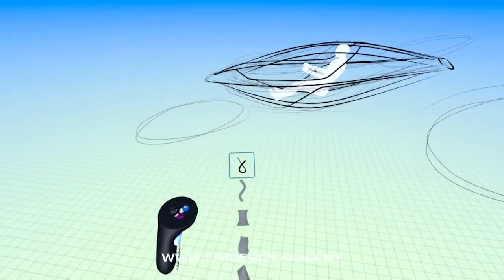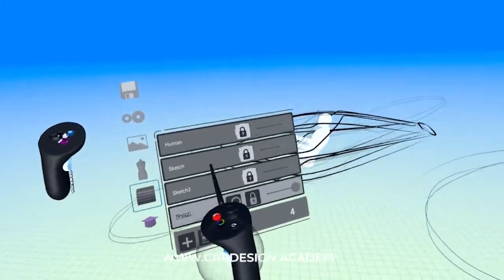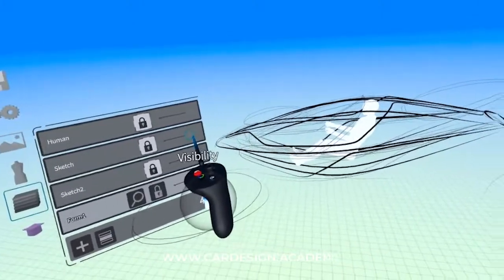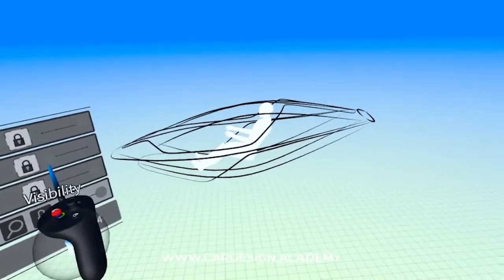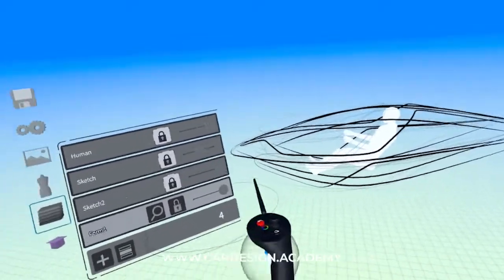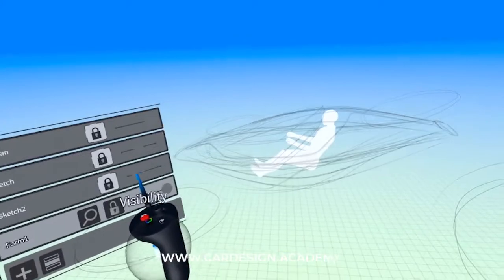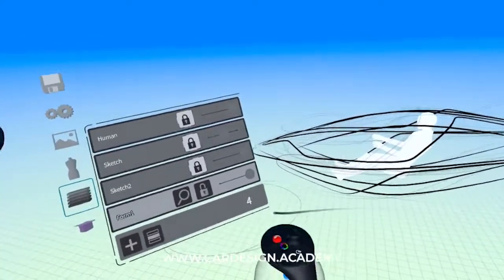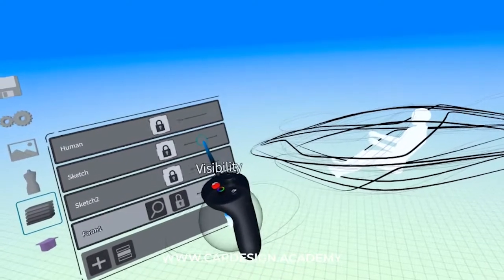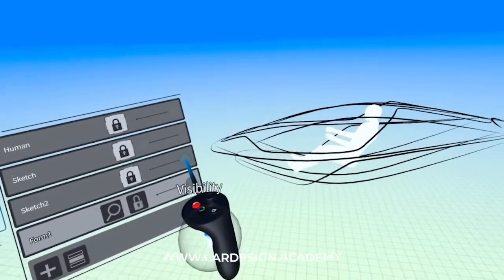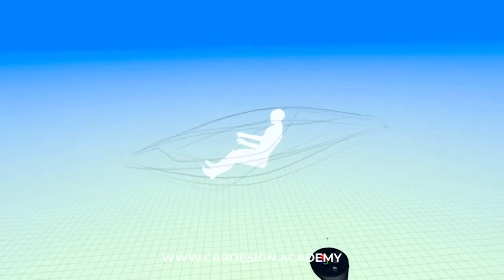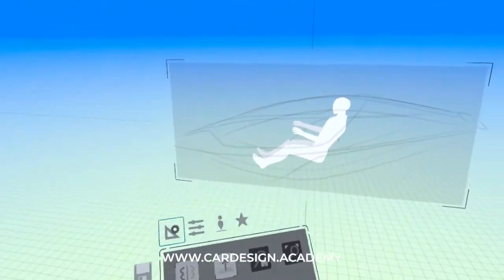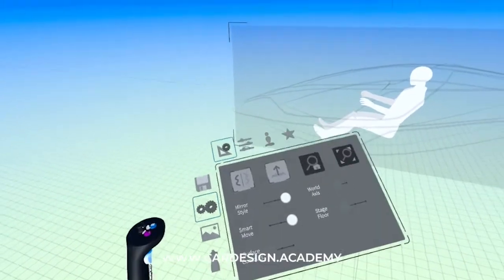This is a quick line sketch just to establish a general shape and proportion and volume and to understand how it fits with the occupant. The next step is to really start to explore form. So what I'm going to do first is go into my layers, where I've got a layer for my mannequin, my under sketch, and the cleanup sketch. Then I'm going to create the form layer and turn my sketch layers way down just as a reference. I'm going to turn on my mirror plane and go straight into sub-D.